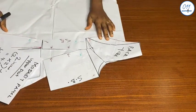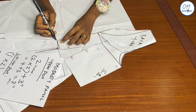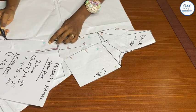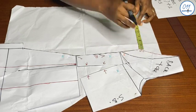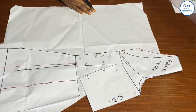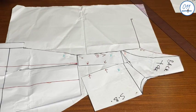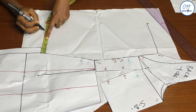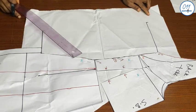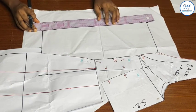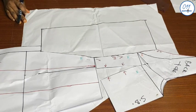Using my freehand I will go ahead to trace out the shape at the center back of the dress. I will measure and mark seven inches at the upper part and square a line across. At the lower part I will measure and mark five inches and also square a line across. I will now join these two points together and this is the modesty panel.